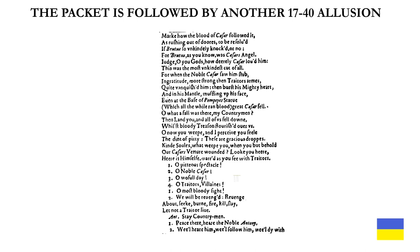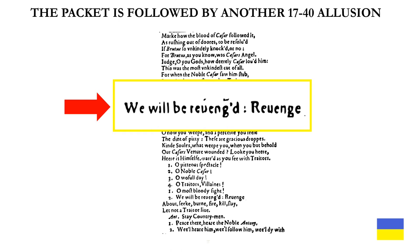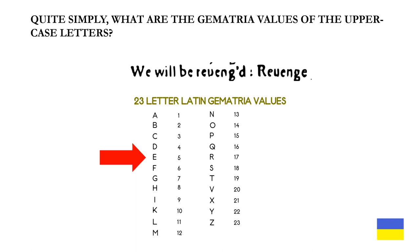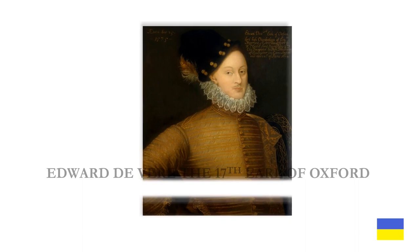But that's not all. The packet of letters and numbers is followed by another 1740 allusion that I just discovered today: 'We will be revenged: revenge.' Quite simply, what are the gematria values of the uppercase letters in this line? Who knows — there may be more puzzles hidden on the page. But what is clear is this is more evidence that...